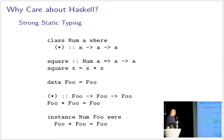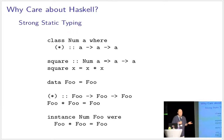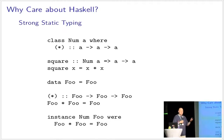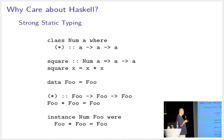The Haskell type system is very nice. It's a statically typed language with very strong typing. Unlike in C, if you have a function that expects a signed integer and you pass it an unsigned integer, that's a compiler error — you can't do that. You have to explicitly convert different types and catch overflows or underflows. Types are very strictly enforced.